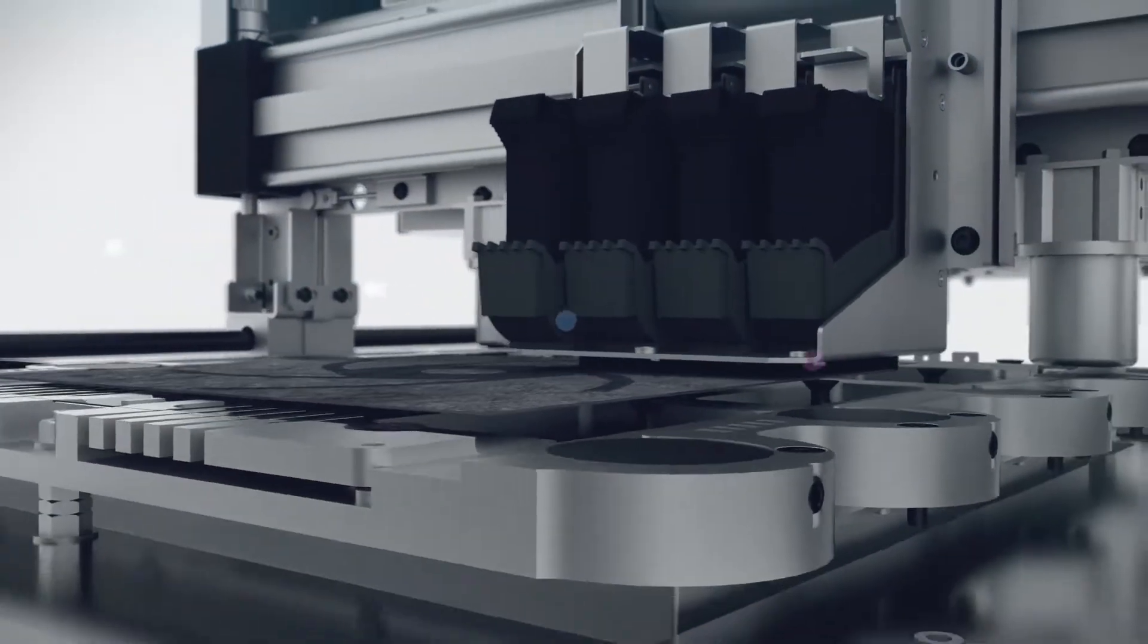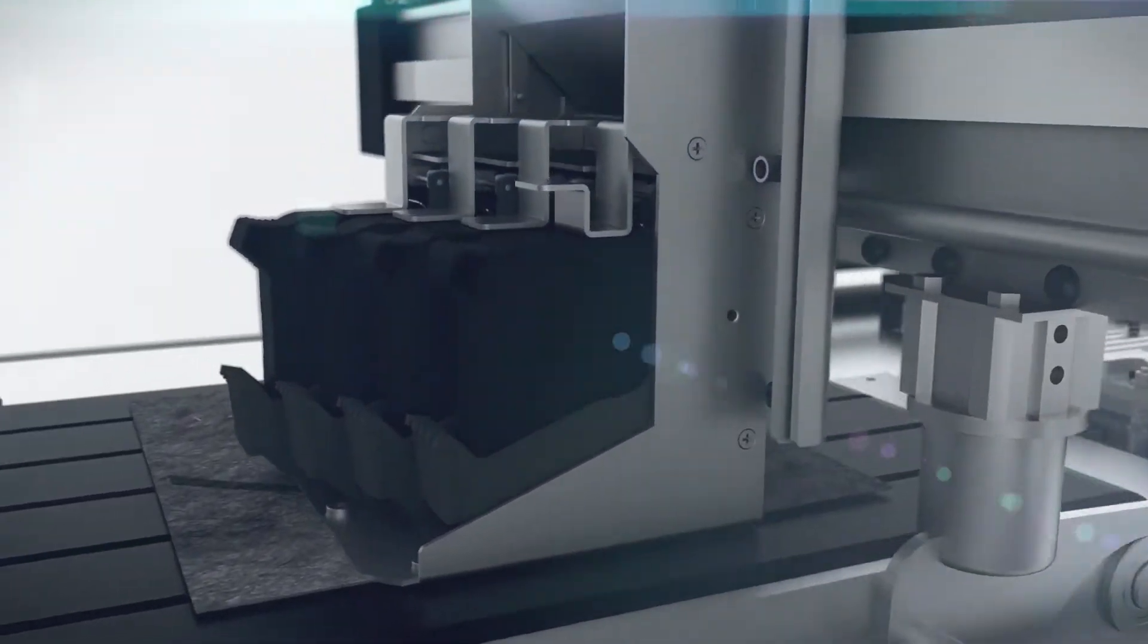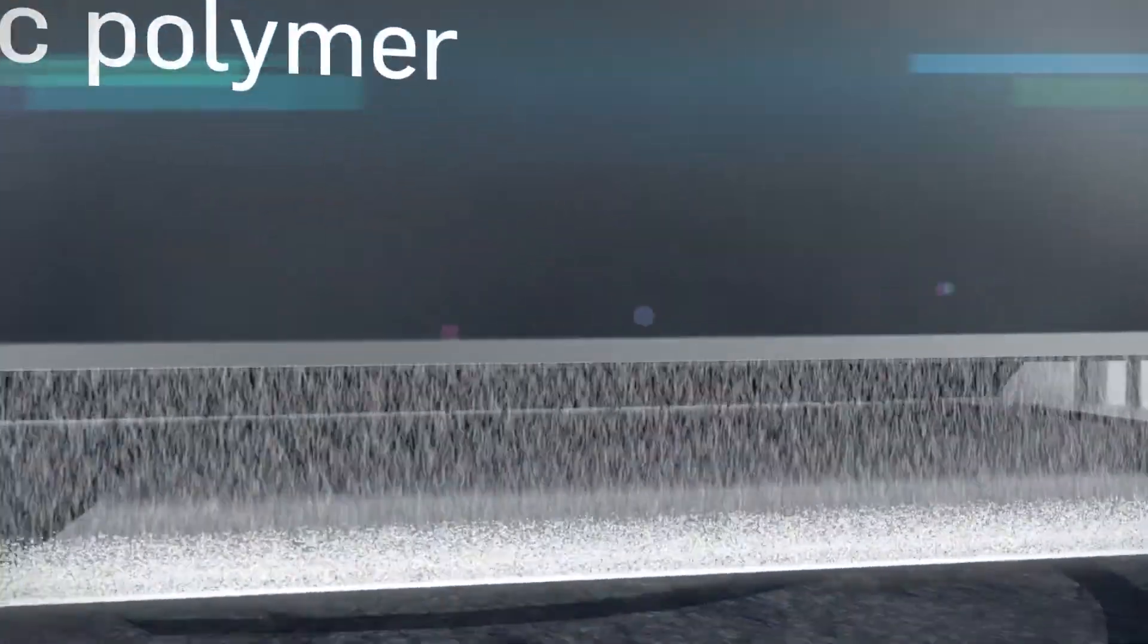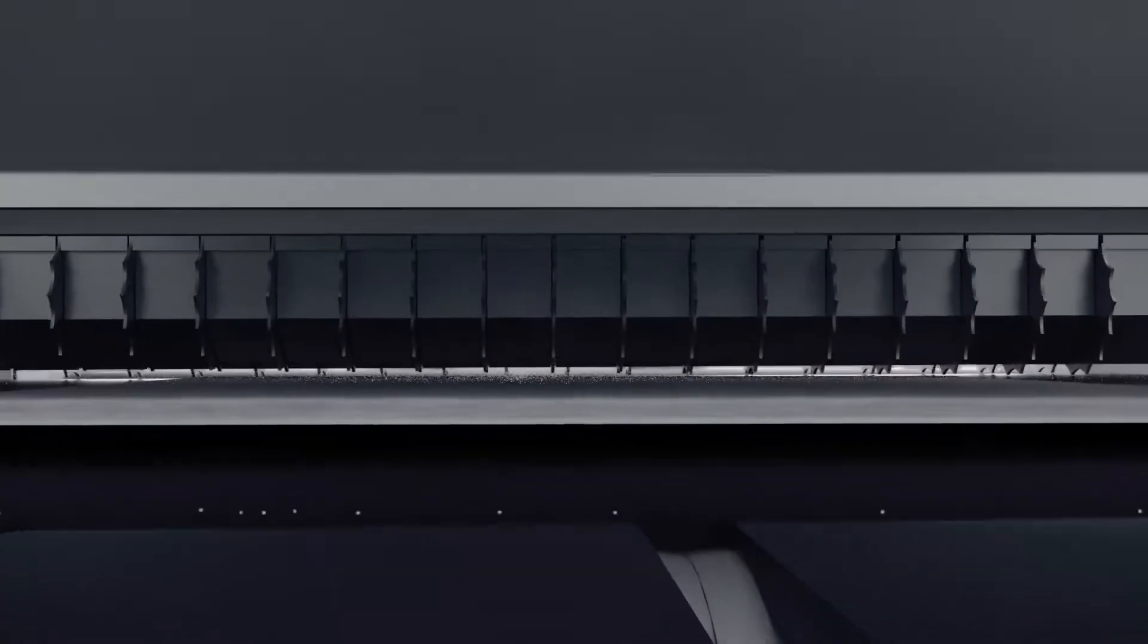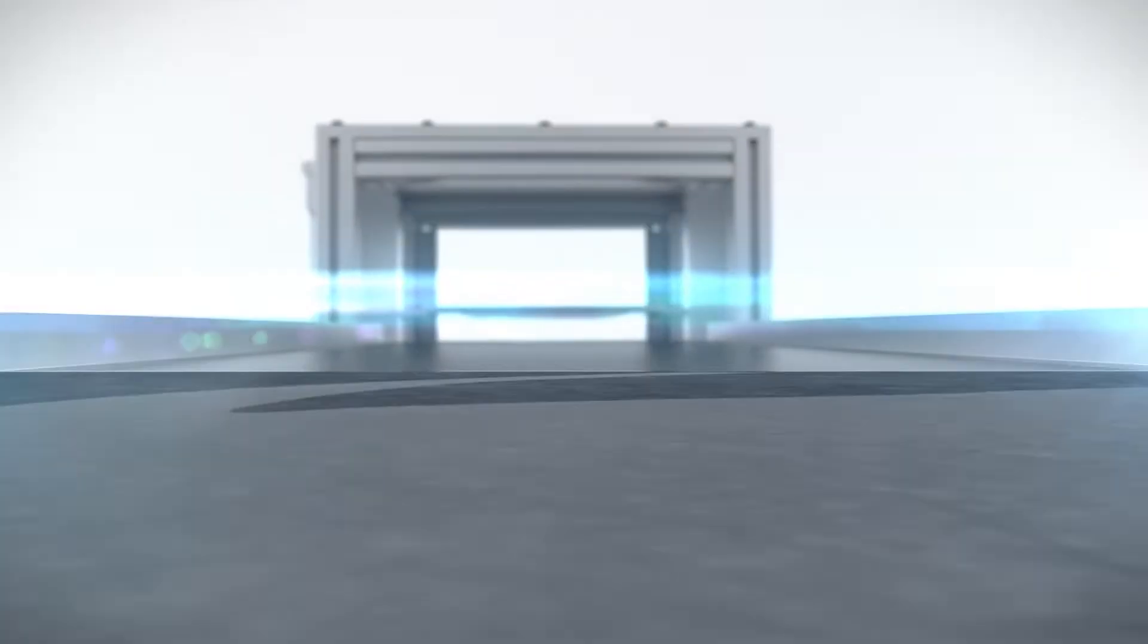The sheets pass through a powdering system where polymer powder is flooded onto the sheet. The powder sticks to the sheet where the fluid is deposited. The excess powder is vacuumed off and the polymer is selectively deposited on the sheet.